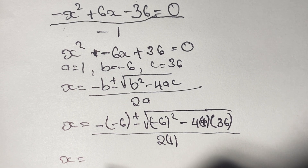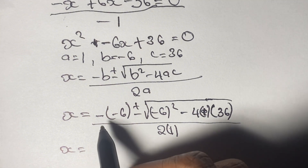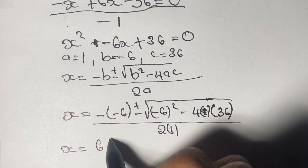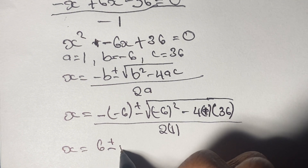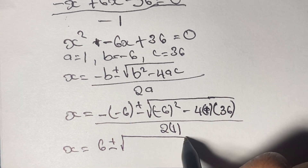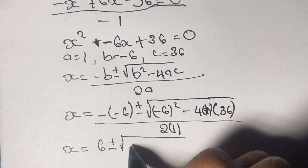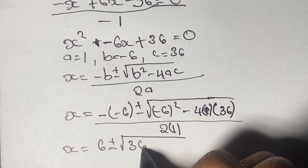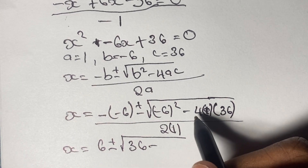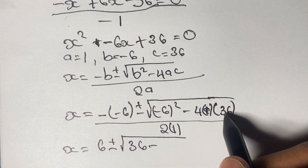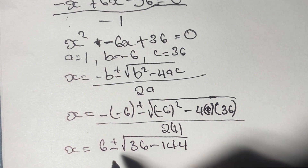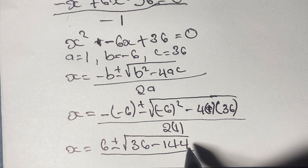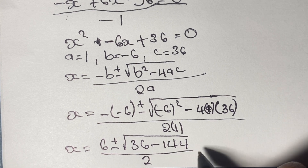So here we have x equal to — negative times a negative gives us a positive — so we have positive 6 plus or minus the square root of negative 6 squared, that's going to be 36, minus 4 times 1 times 36, that's going to give us 144. So we have 36 minus 144, all over 2.